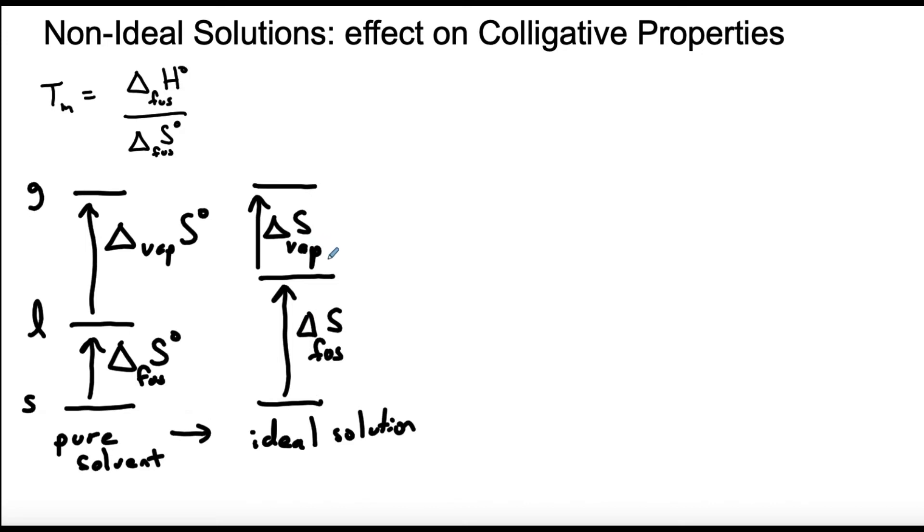On the other hand we're going from solvent that's in a solution to pure solvent in the vapor and so here this entropy change is decreased. So notice that both the solid and the gas are not changed, we're just changing the amount of entropy of the solvent when it's in the liquid phase and so that's why this shrinks and this grows. And notice what that's going to do to our phase transition.